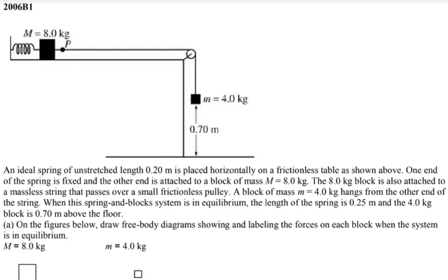One end of the spring is fixed and the other end is attached to a block of mass 8 kilograms. The 8 kilogram block is also attached to a massless string that passes over a small frictionless pulley. A block of mass 4 kilograms hangs from the other end of the string. When the system is in equilibrium, the length of the spring is 0.25 meters — it started at 0.2 meters and stretched to 0.25 meters. The 4 kilogram block is 0.7 meters above the floor.